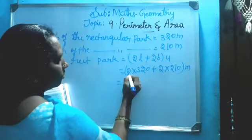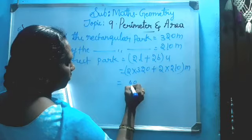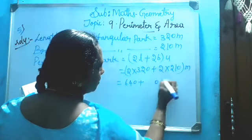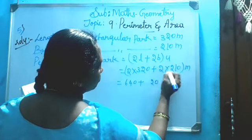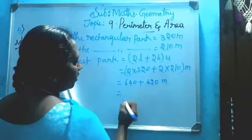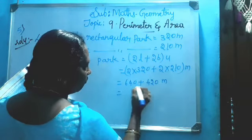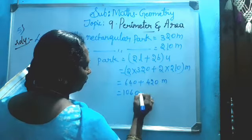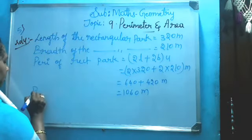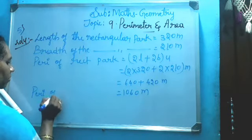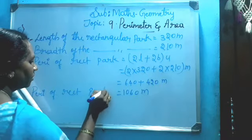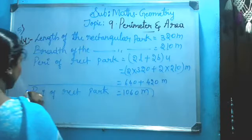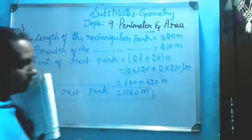See, two zeros are 0, two twos are 4, two threes are 6. Easy multiplication. Two zeros are 0, two ones are 2, two twos are 4. Now total it: 0 plus 0 equals 0, 4 plus 2 equals 6, 6 plus 4 equals 10. What is the answer? Perimeter of rectangular park is 1060 meters.